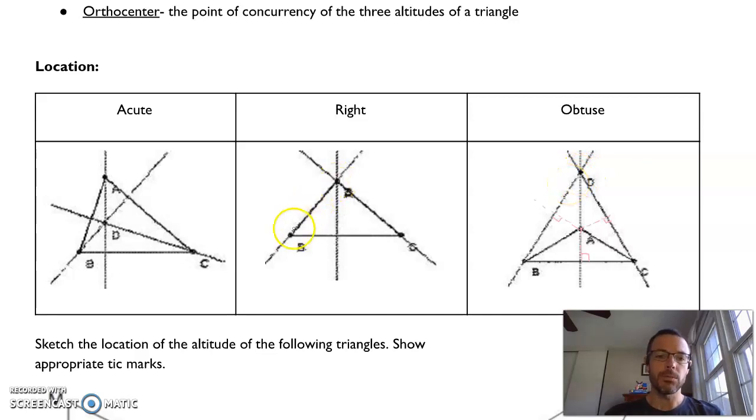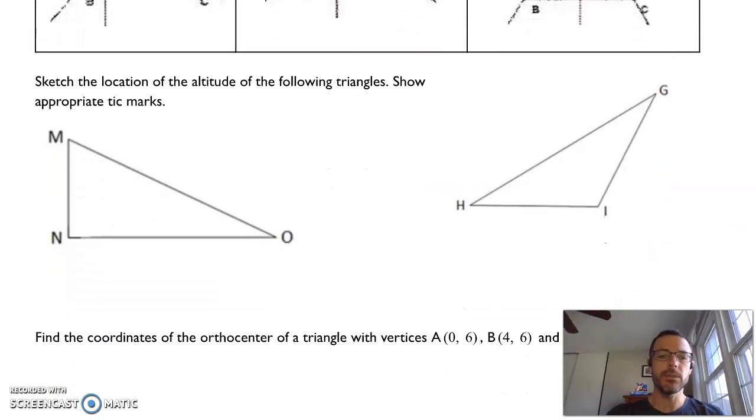And again, if it is a right triangle, your altitude from B is going to be right here at that right angle. Your altitude here, and then your altitude from your right angle actually goes through your right angle, so that becomes your orthocenter. So take a minute and see if you can use those concepts and those ideas to sketch where the orthocenter would be on these two triangles.